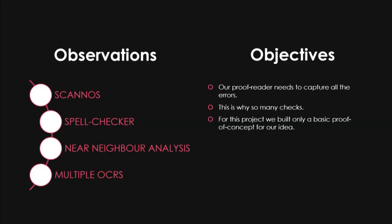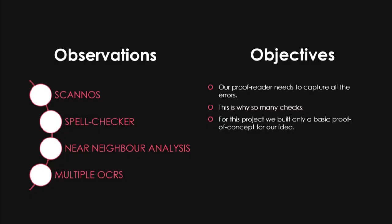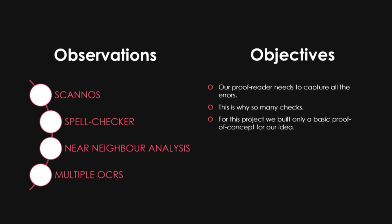Next is a spell checker — we can use a common dictionary or any online spell checker library. Then near-neighbor analysis: for example, 'barking dog' versus 'barking log' — we know that 'log' and 'barking' don't go together usually, so we can report 'log' as an error. Then multiple OCRs: instead of relying on only one OCR, we can use multiple OCRs and report all the different errors we get.